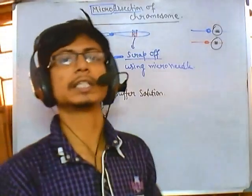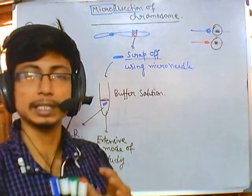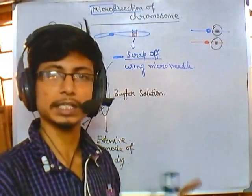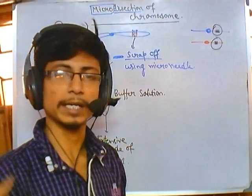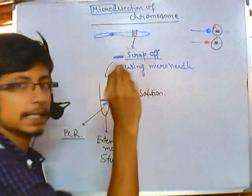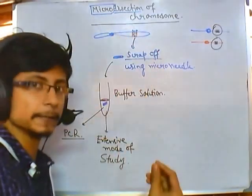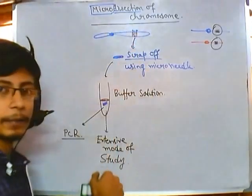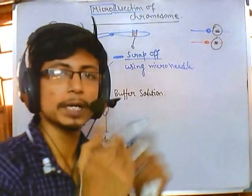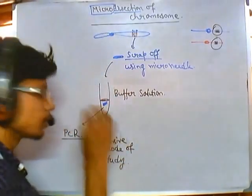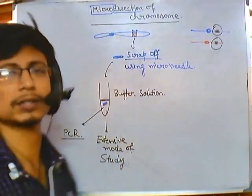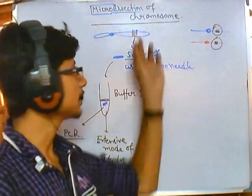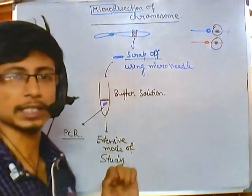Suppose there is a duplication or deletion in the chromosome. The best technique to detect duplication and deletion is comparative genomic hybridization or CGH. Using CGH, if we get the idea that a particular segment is duplicated, we then do a micro dissection of that duplicated or diseased chromosome, scrap off that segment, amplify the product, and sequence it to know exactly which part is duplicated. This lets us study the diseased chromosome in extensive detail.